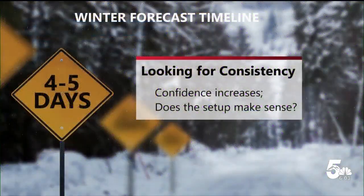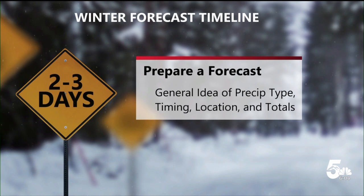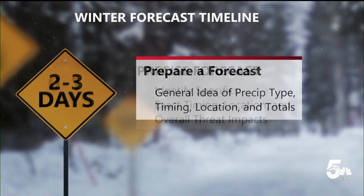Here's how we do it. Within five days of a storm, we're looking at model consistency — do the models agree? We'll show you the big picture view at this range. Within three days, the storm has generally formed. We've got lots of data and the models are better, so we'll tell you specific impacts, timing, and snow totals, and tell you about what could still change.